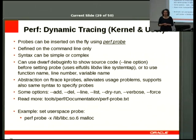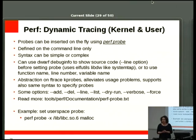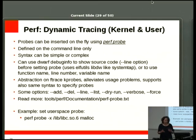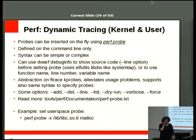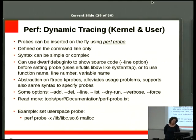You can do dynamic tracing with perf using 'perf probe'. You define a probe for a specific executable in user space, and you can add or delete probes, or do a dry run. The interesting thing is you can use debugging information to set a probe at a specific location and also collect the values of specific variables at that location.